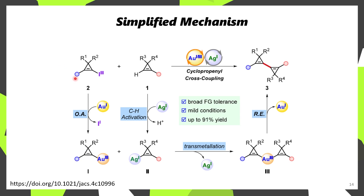The way that this subsequent coupling chemistry works is: first, the hypervalent iodine reagent undergoes oxidative addition to gold(I), forming a cyclopropenyl gold(III) species. At the same time, the unsubstituted cyclopropene undergoes C–H activation by silver(I), affording a silver(I) cyclopropenyl species. The silver(I) complex then undergoes transmetallation, donating a cyclopropene to the gold(III) center, and through reductive elimination, gold(I) is regenerated and the bis-cyclopropene product is formed.